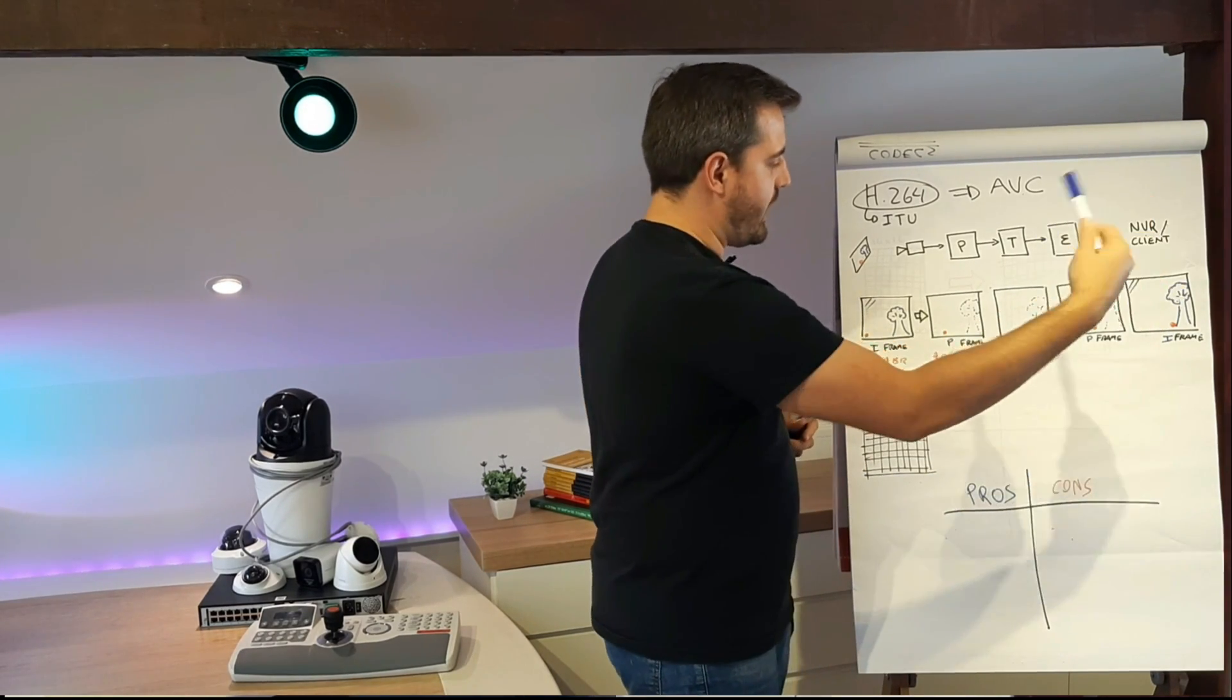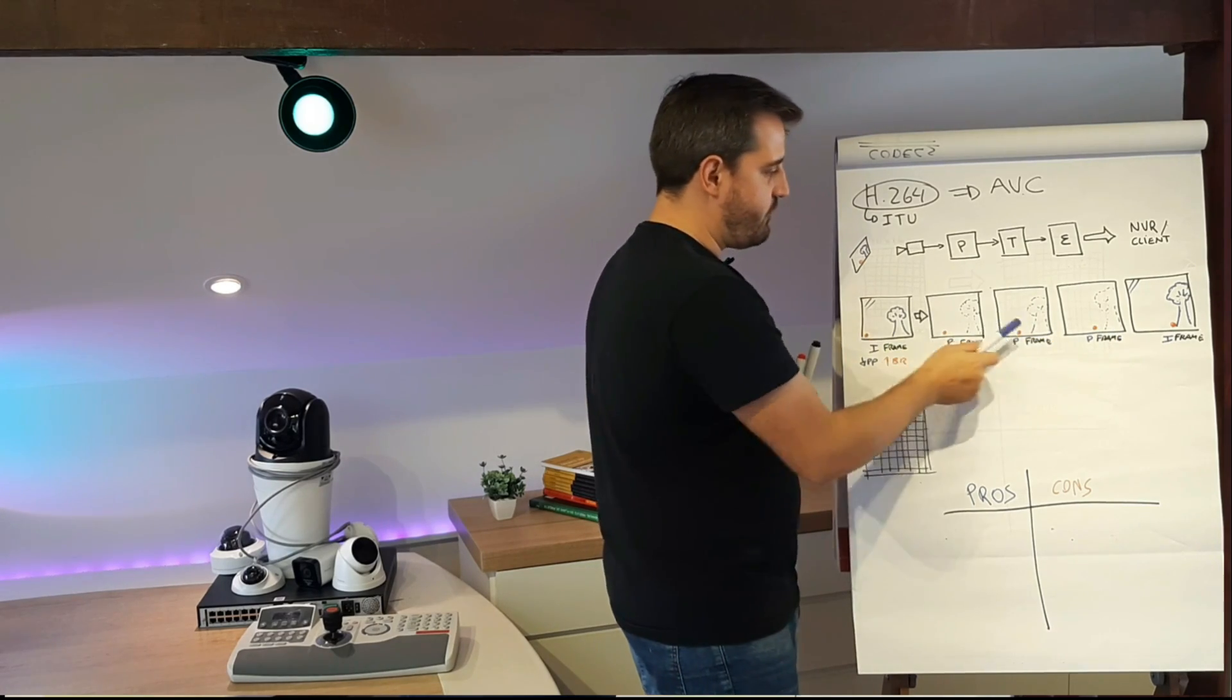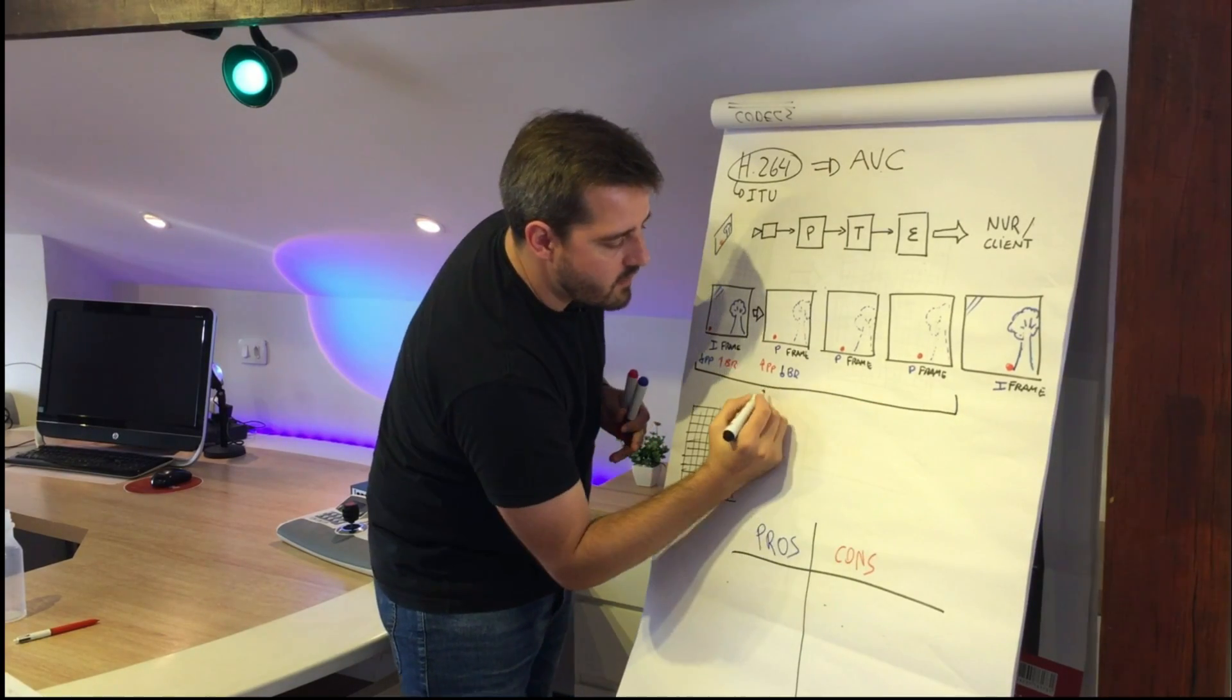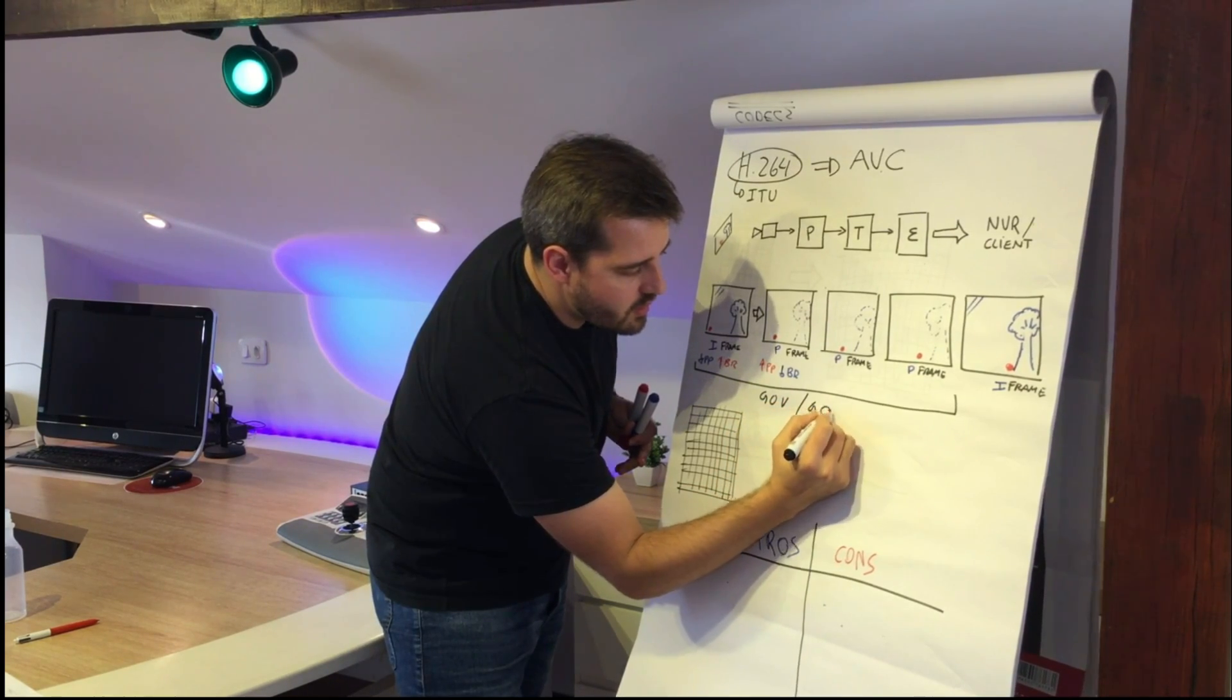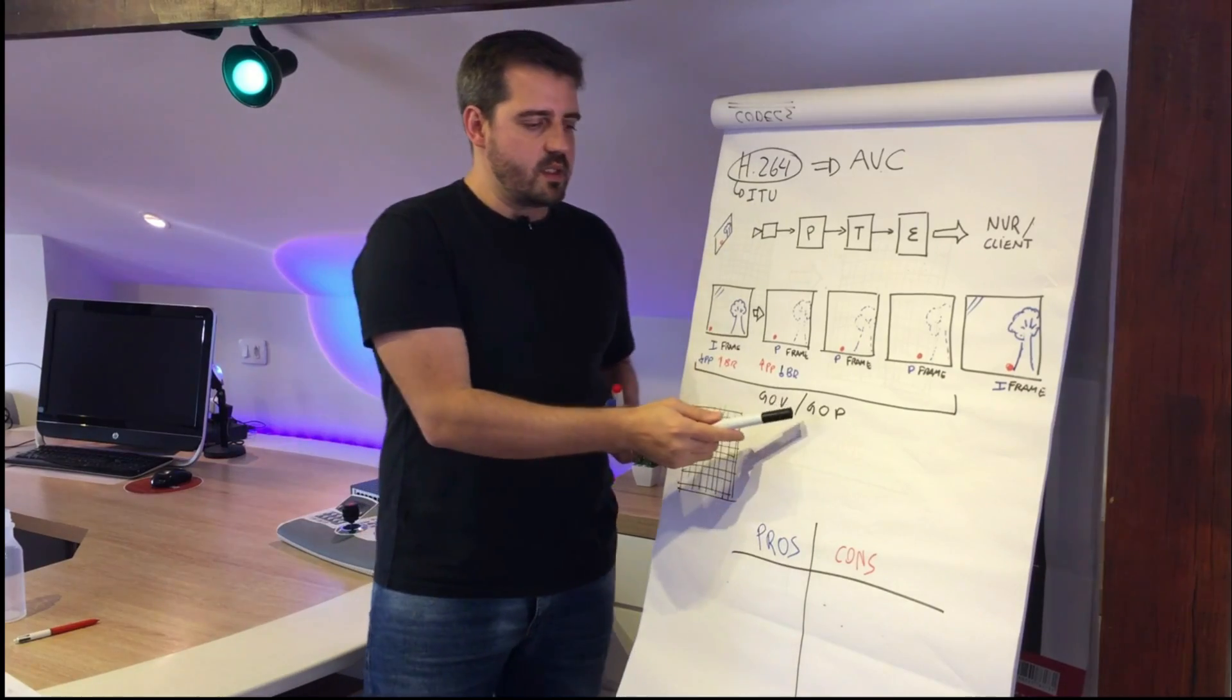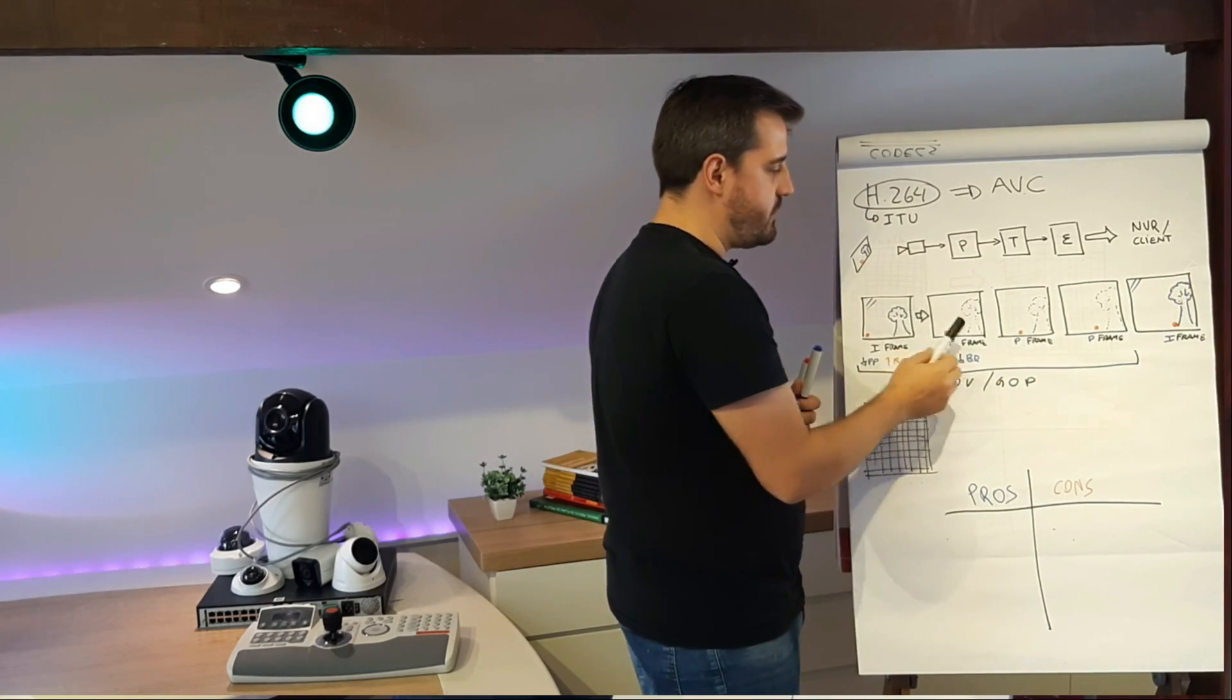What determines the number of P-frames and I-frames is something called GOP or GOP, Group of Video or Group of Pictures, it's the same. This is a setting that you can set in the cameras that will define how many frames I want to send considering the I-frame and the P-frames.